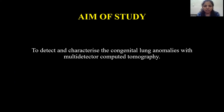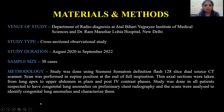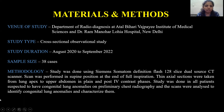The aim of the study was to detect and characterize congenital lung anomalies with multi-detector computed tomography. The study was conducted at the Department of Radio Diagnosis at ABVAMS and Dr. RML Hospital, New Delhi. Study type: cross-sectional observational study. Study duration was from August 2020 to September 2022. Sample size: 38 cases. The study was done using a Siemens Somatom Definition Flash 128-slice Dual-Source CT Scanner. Scans were performed in supine position at the end of full inspiration, with thin axial sections from lung apex to upper abdomen in plain and post-IV contrast. All patients suspected to have congenital lung anomalies on preliminary chest X-ray were included, and scans were analyzed to identify and characterize the anomalies.